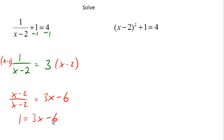And now I have, again, a nice linear equation that I can solve. So I'll go ahead and add 6 to both sides. And that will give me 7 equals 3x, divide by 3, x equals 7 thirds.